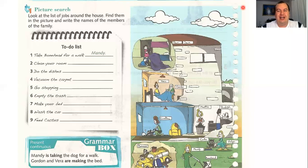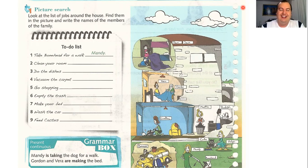Muito bem. Se você já fez, agora pode dar o play. So, number one: take Bonehead for a walk — we have Mandy. And number two, who did you write? Who's cleaning the room? We have two people — one boy and one girl. The girl is dressed in pink and the boy is dressed in blue. Did you write the right answer? Let's check. Number two: we have Sam and Pam. They are cleaning the room.